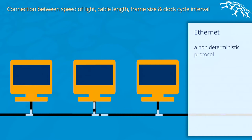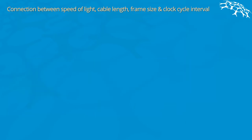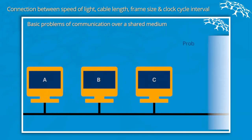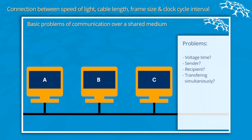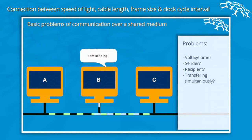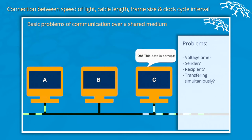What could happen then is that a collision could occur. As we recall from the first video of this series, a big problem is who is supposed to use the medium. If A starts to transfer some data, at some point B might also decide it wants to use the medium and transfer some data. What happens then is that C receives corrupted data because it receives data from both A and B.